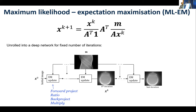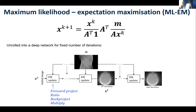So first of all, that process — forward project, ratio, back project, multiply, divide by sensitivity image — that's the so-called EM update. It takes the measured data; once you've done an EM update of some image estimate you get the next update, and so on. For a certain number of iterations, this is a cascade of operators — and so that should be familiar to you, that's just a deep network. So iterative reconstruction, if you don't do any learning, is a non-trainable deep network.